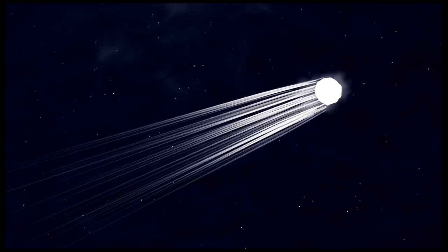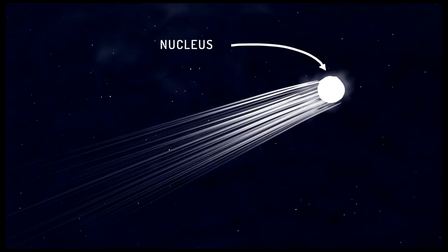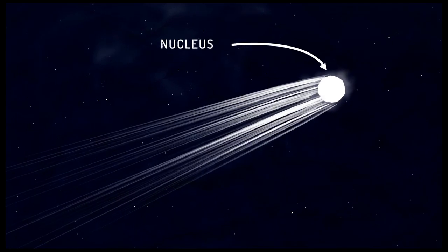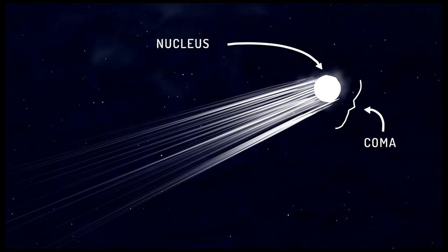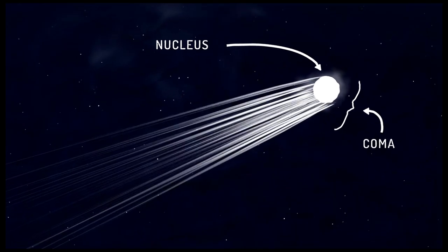The main part of the comet is the nucleus. It's a small ball of ice and dust. The coma is the atmosphere around it, and the tail extends out back from the coma.